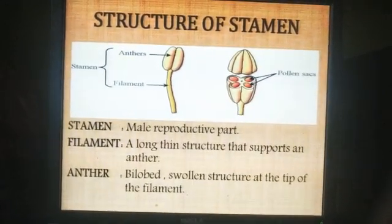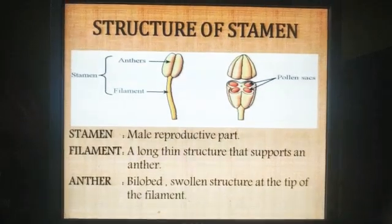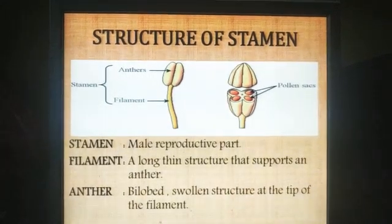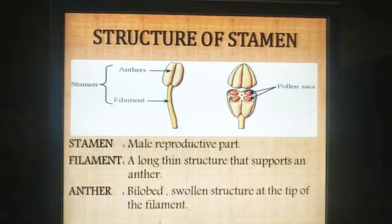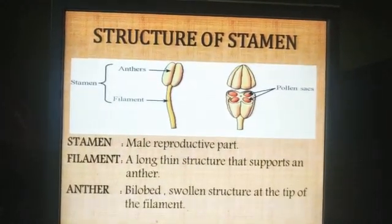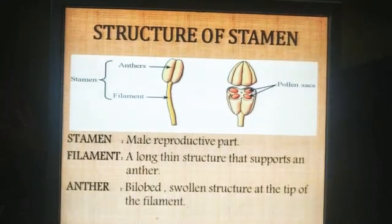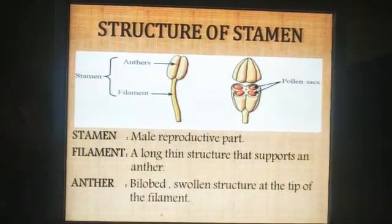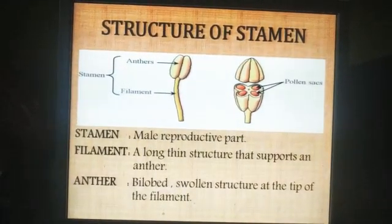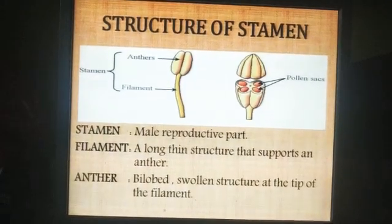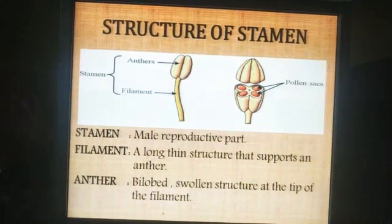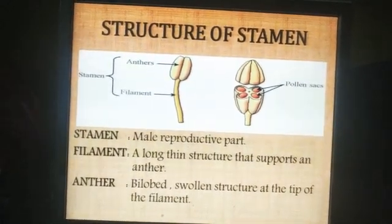Next we will see the structure of the stamen. Let us look at the structure of stamens in a little more detail. The stamen is the male reproductive part of the flower. The first part is the filament — a long, thin structure that supports the anther. The anther is a bi-lobed swelling structure at the tip of the filament, meaning it has two lobes or two compartments. When you look at the cross-section of the anther more closely, it has four sacs, and each sac contains pollen grains.